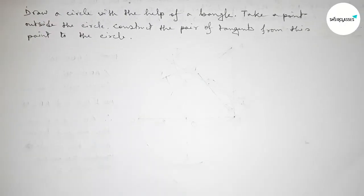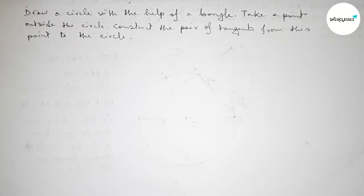Hi everyone, welcome to SI Share Classes. Today in this video we are constructing an important geometrical construction. First draw a circle with the help of a compass, then take a point outside the circle. We have to construct a pair of tangents from this point to the circle. So let's start the video.